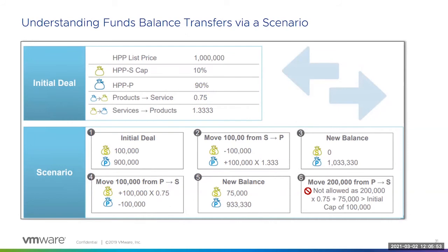Here's a scenario to help you better understand how transfers between funds work. A customer purchased a $1,000,000 MSRP in HPP credits with 10% towards services, which amounts to $100,000. Based on the underlying discounts on the ELA, they can move fund credits from products to services with a 0.75 exchange ratio, and from services to products with a 1.333 exchange ratio. A customer moves $100,000 from services to products; their fund balance for products increases from $900,000 to $1,033,330. Next, they move $100,000 from products to services; their fund balance for services increases from $0 to $75,000. Next, they wish to move $200,000 from products to services; this transfer will not be allowed because the resulting balance would exceed their original cap of $100,000.